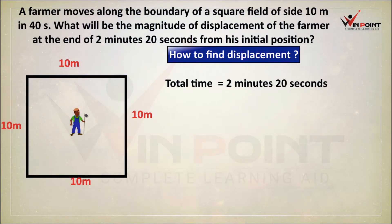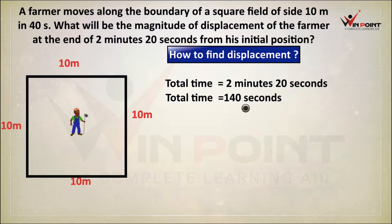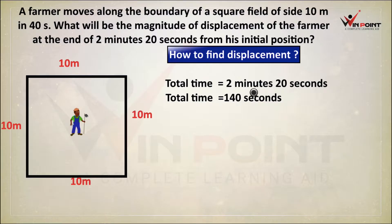We know the speed and we know the time. Total time is equal to 2 minutes 20 seconds. We are converting that into seconds: 1 minute is 60 seconds, 2 minutes is 120 seconds, 120 plus 20 equals 140 seconds.